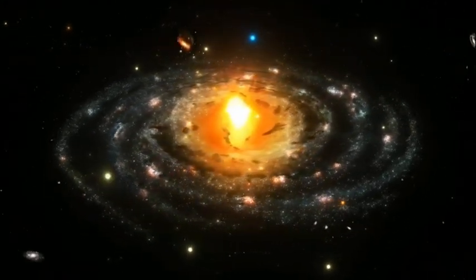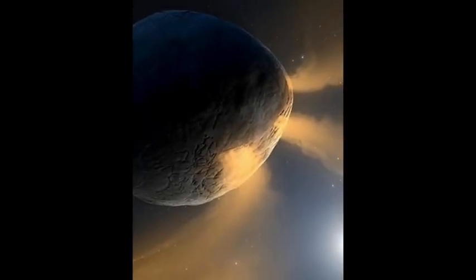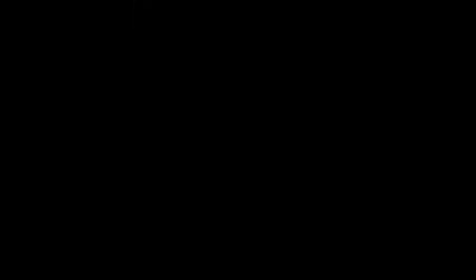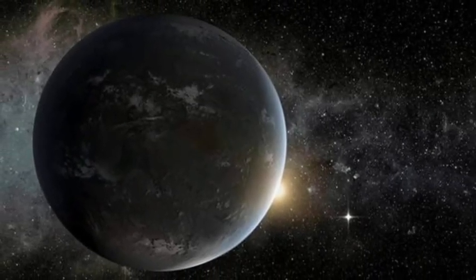However, this doesn't mean they haven't tried. Hypothetical planets like Phaeton, supposedly located between Mars and Jupiter, or Vulcan, thought to be closer to the Sun than Mercury, were once believed to be real.